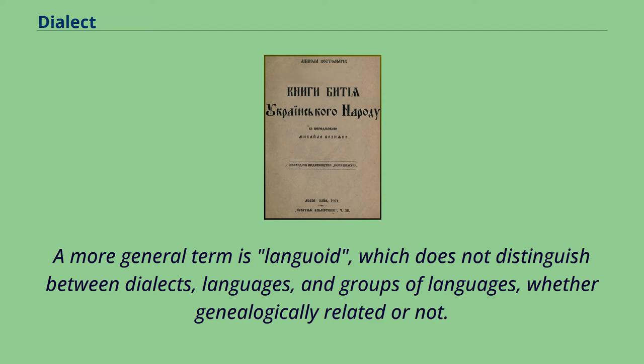There are various terms that linguists may use to avoid taking a position on whether the speech of a community is an independent language or a dialect of another language — the most common is variety, another is lect. A more general term is langoid, which does not distinguish between dialects, languages, and groups of languages, whether genealogically related or not.